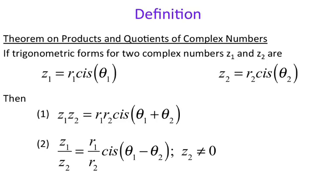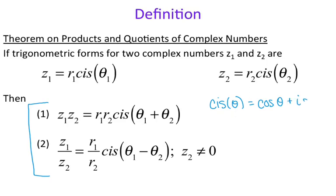The theorem on products and quotients of complex numbers states that if the trigonometric forms for two complex numbers z1 and z2 are z1 equals r1 cosine i sine of theta 1, and z2 equals r2 cosine i sine of theta 2, then you can find the product and the quotient by following these formulas. I'm writing these in short form with CIS — just don't forget that CIS of theta is the same thing as cosine of theta plus i sine of theta.